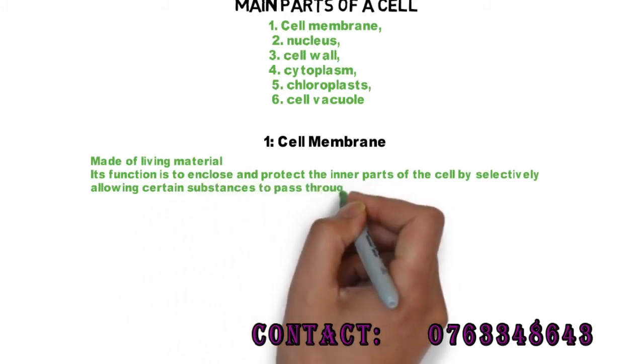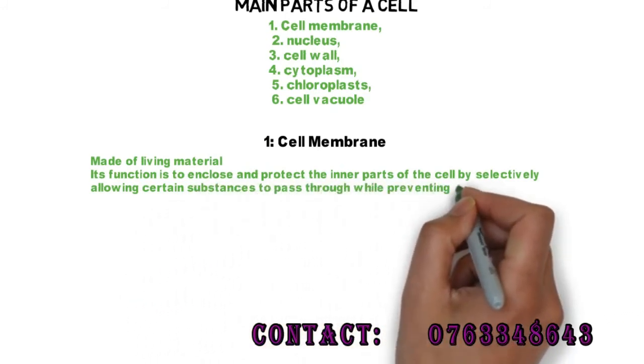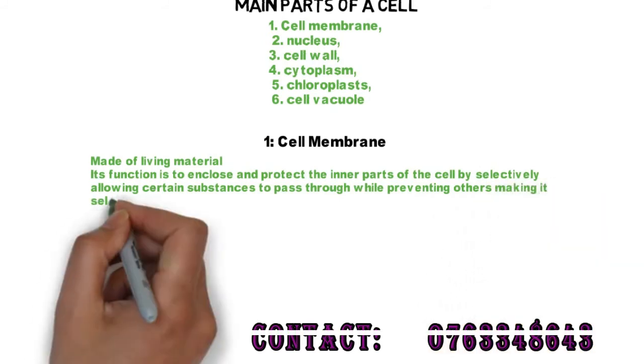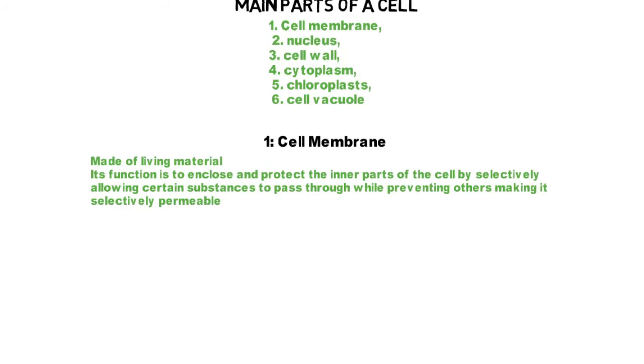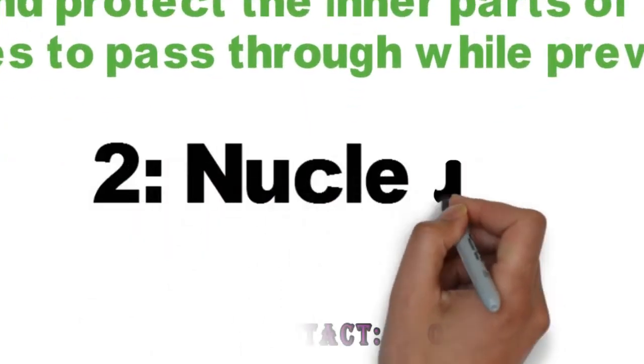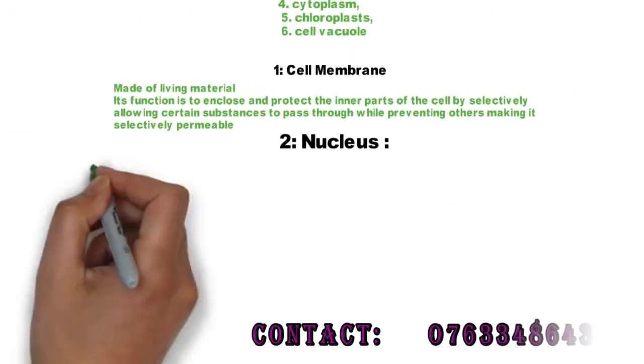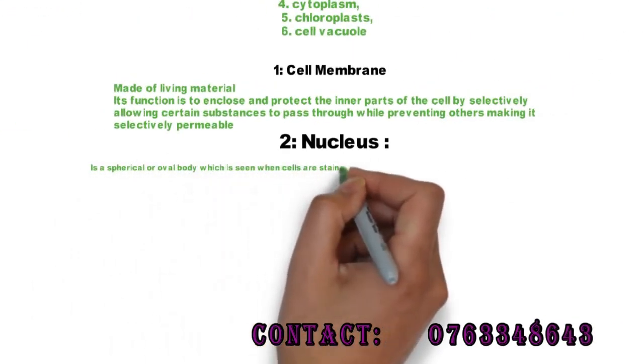The nucleus is the second part. The nucleus is the spherical or oval-shaped body which is seen in the cell when stained, and is composed of the nuclear core, nucleoplasm, and other surrounding materials.